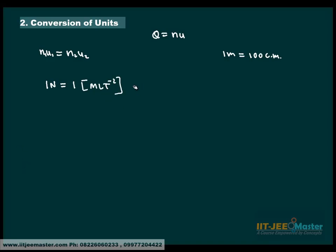While in the CGS system, it is N2 into, in the CGS system, it is M2, L2, T2 and so on. So here you can see that dimensional formulas are used for their units in place of their units to find N2.